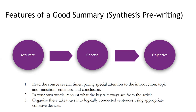There are three steps for writing a good summary. First, you ideally read the source more than once — I know in this busy world that's not always possible, but if you can, read it more than once. While you're reading, pay special attention to the introduction, the topic and transition sentences, and the conclusion.